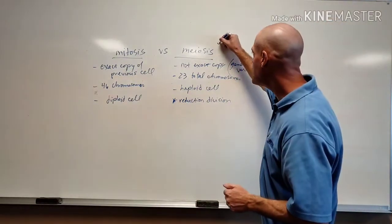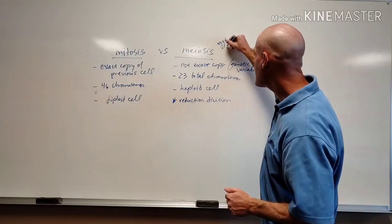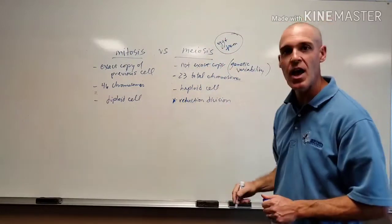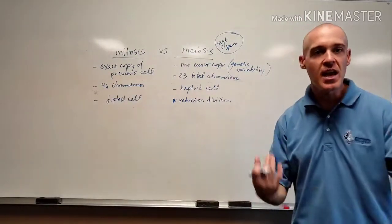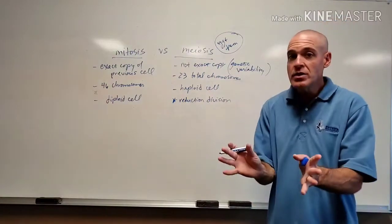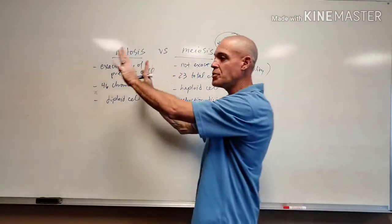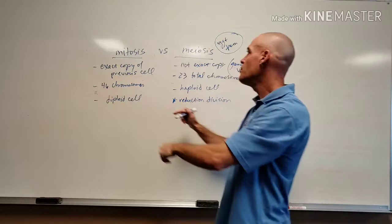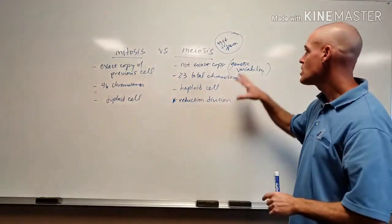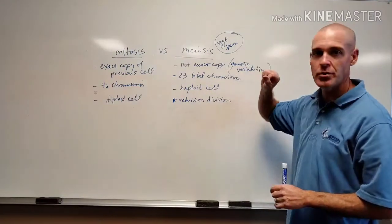Meiosis is only for the egg and the sperm cells, which we call germ cells, referred to as gametes, or referred to as sex cells. Those are the only cells in the body. So we have a lot more cells undergoing mitosis than meiosis in numbers. Again, meiosis is only reserved for egg and sperm.